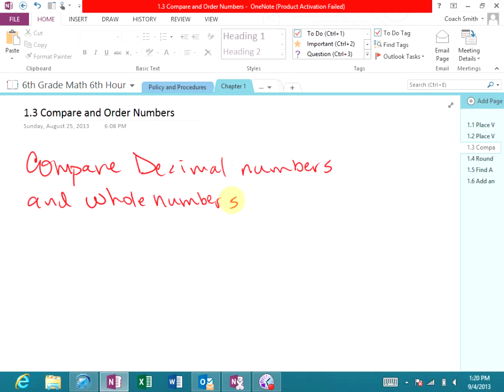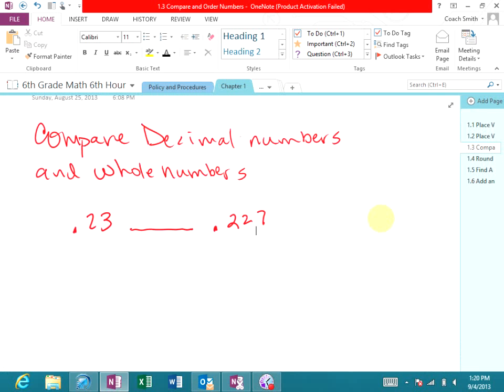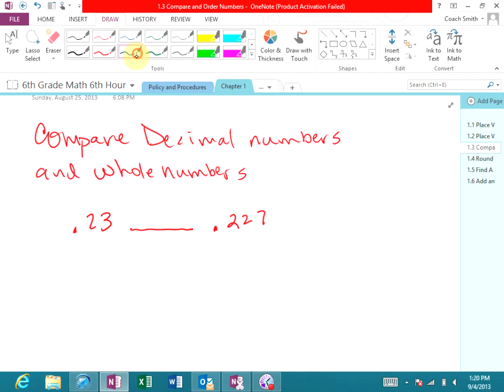Let's say we have 0.23 and they want us to compare it to 0.227. They want to compare those two numbers and either put the greater than or less than or equal sign in the blank. Now here's your first step, the first thing that you do. Step one, let me write it underneath the problem so we have a little bit more room to write.